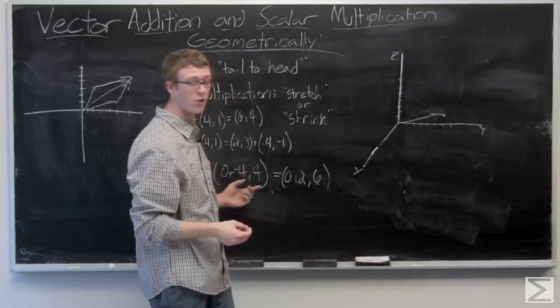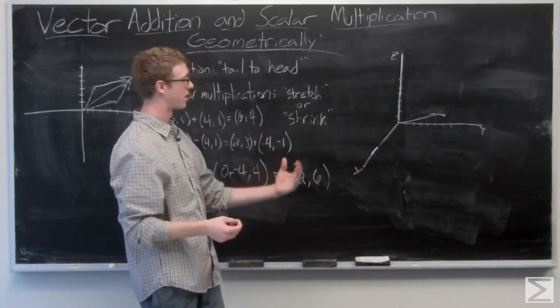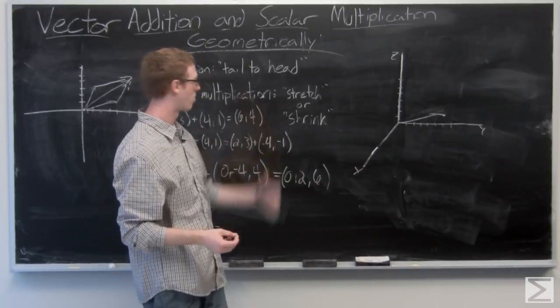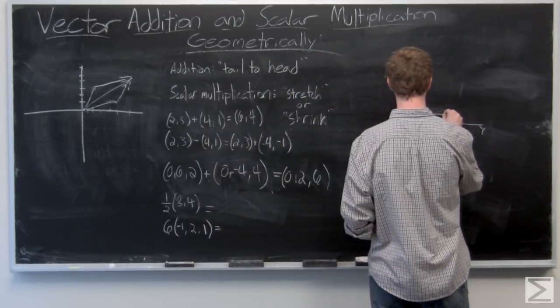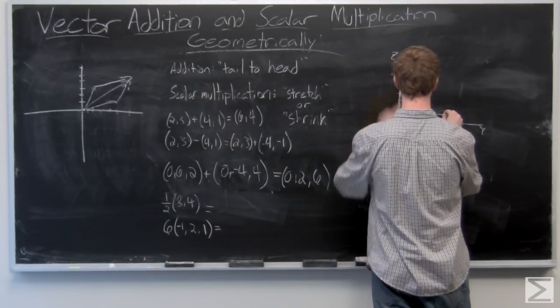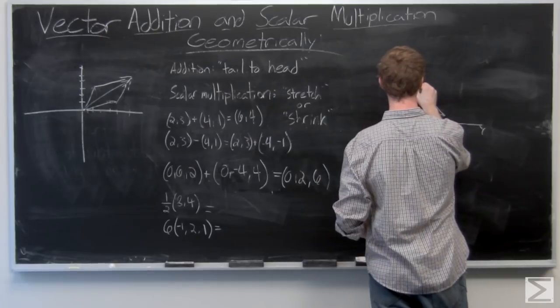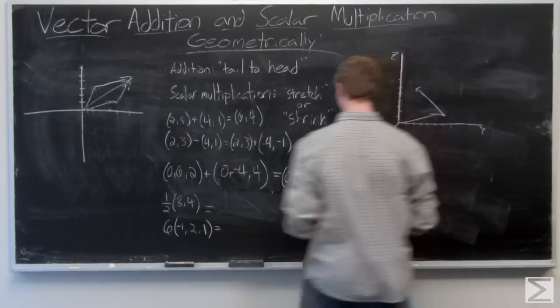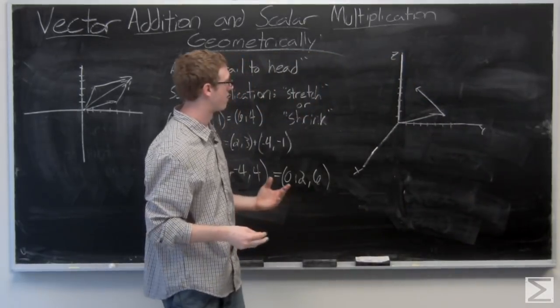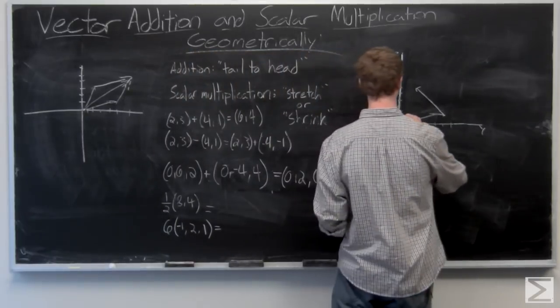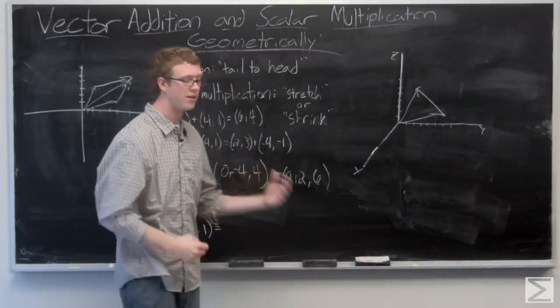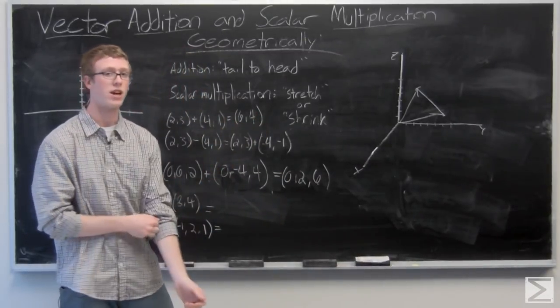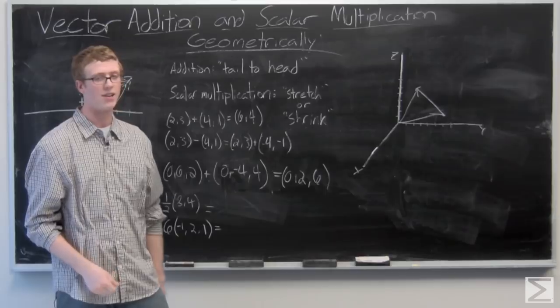And (0, -4, 4) - it's going to come back 4 and then up 4 more in the z direction. The resultant vector is (0, 2, 6). Again, adding component-wise and using this triangle rule to add your vectors - really great rule.